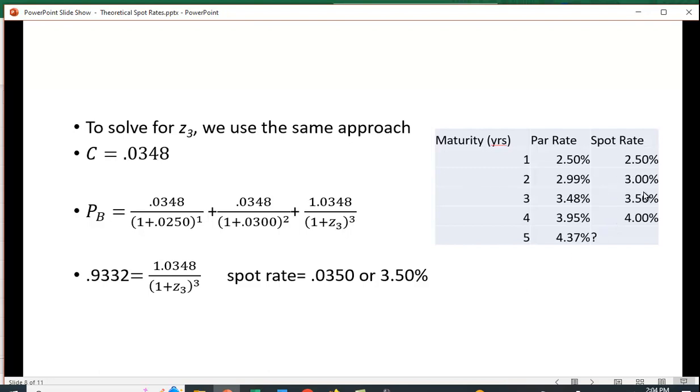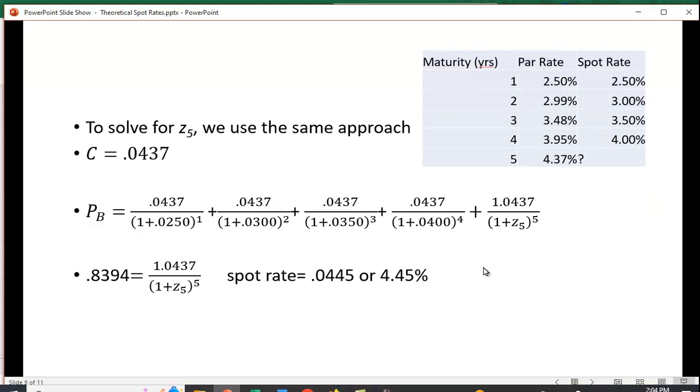Now we're feeling pretty comfortable that we're doing this correctly. Let's jump to solving for Z5. We know what the par rate is, 0.0437, 4.37%, so that's going to be the cash flow for these five years. And, of course, in that final year, you get back the par value.